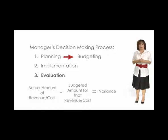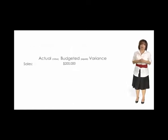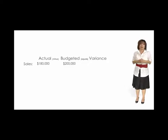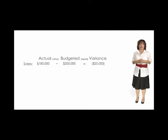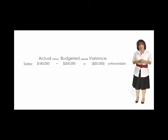For example, assume a company budgeted for sales of $200,000 for the year, but only achieved $180,000 in actual sales for the year. When budgeted sales are subtracted from actual sales, we arrive at a negative amount of $20,000. This variance is unfavorable because a business prefers to have sales exceed expectations, not fall short.